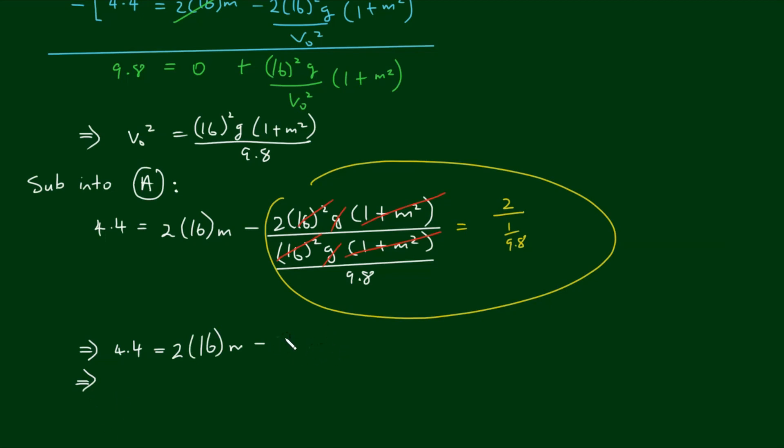So we end up with 4.4 equals 2 by 16 times m minus 19.6. If we solve for m now, m equals 4.4 plus 19.6 divided by 2 times 16, which equals 24 divided by 32, which equals 3 quarters.